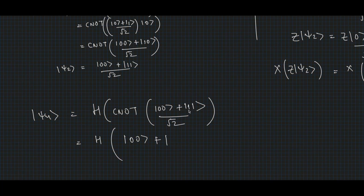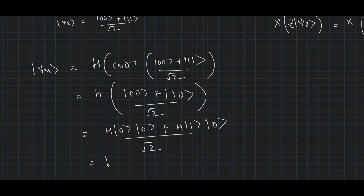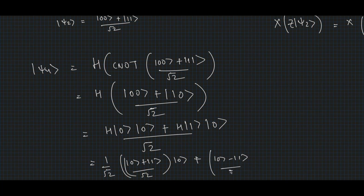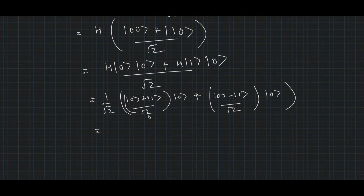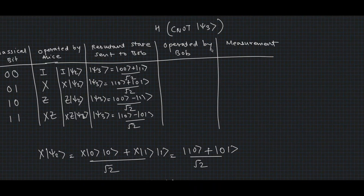In the first case, when Alice was supposed to send 00, ψ₃ = (|00⟩ + |11⟩)/√2. When CNOT operates: CNOT|00⟩ = |00⟩ and CNOT|11⟩ = |10⟩, giving (|00⟩ + |10⟩)/√2. Then the Hadamard gate acts on the first qubit: H|0⟩ = (|0⟩ + |1⟩)/√2 and H|1⟩ = (|0⟩ − |1⟩)/√2. Expanding and simplifying, the |10⟩ terms cancel and the |00⟩ terms add, so ψ₄ = |00⟩.